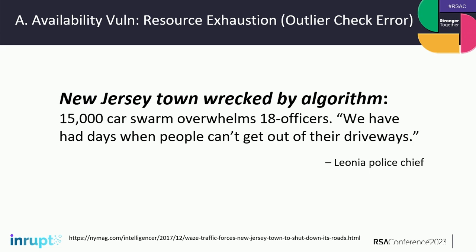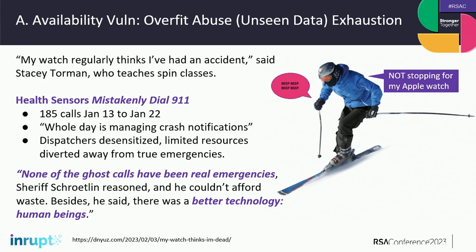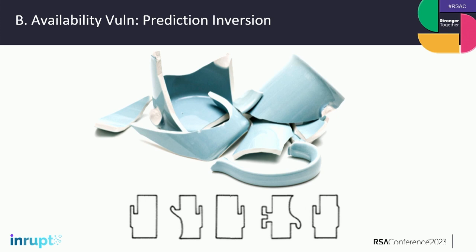Another availability exhaustion example: skiers and cyclists tend to move in ways that Apple detects as a crash. People skiing down a mountain aren't checking their watch, so there were hundreds and hundreds of 911 calls to the point that all the 911 responders now ignore calls coming in from that area. The sheriff said 'I have much better technology here — human beings — I just ignore all the technology because AI is basically junk.' You can create these resource exhaustions yourself if you understand this, and you can look like a car if you're a motorcycle by driving a straight line.